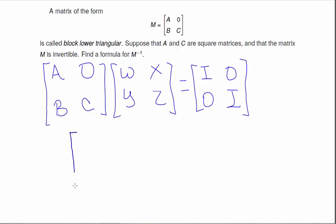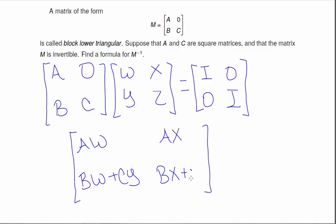Multiplying these two gives me AW plus 0, AX plus 0, BW plus CY, and BX plus CZ. And this should still be equal to the identity matrix.